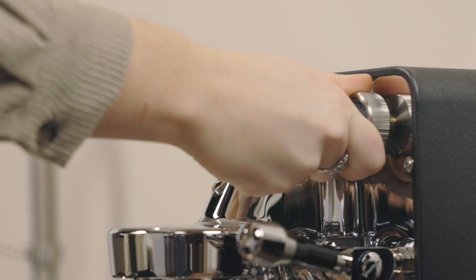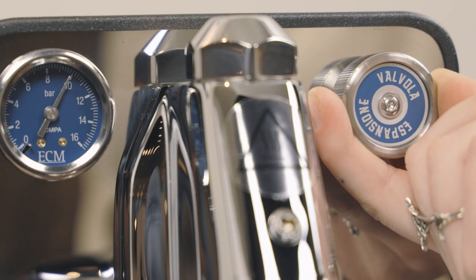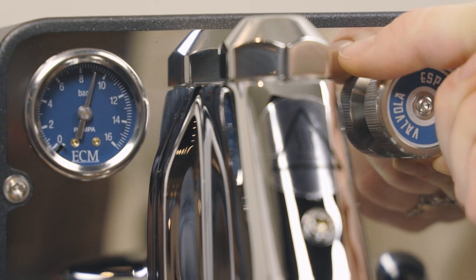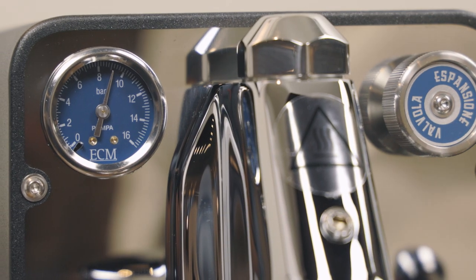Adjusting the expansion valve allows you to adjust the pressure of your machine, choosing a value between 8.5 and 12 bar. This is another variable that impacts coffee extraction.